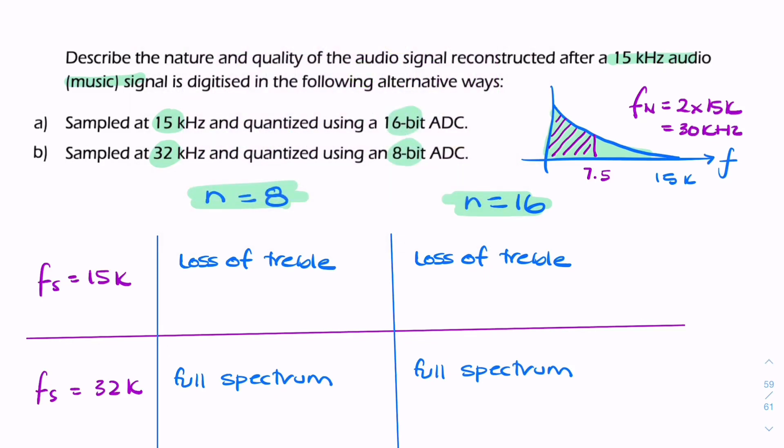If n equals 8 compared to n equals 16, it'll be fewer quantization levels - 2 to the power of 8 as opposed to 2 to the power of 16. Therefore, the step size will be greater. Delta will be greater, and the quantization error, delta over 2, will be greater as well.